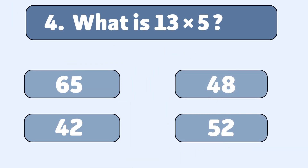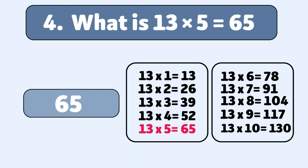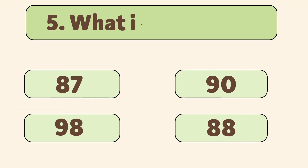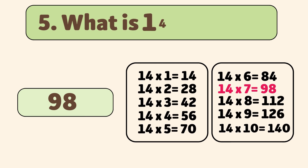13 times 5 is equal to... 16 times 5 is equal to... 14 times 7 is equal to... 98. 14 times 7 is equal to 98.